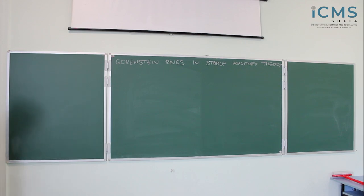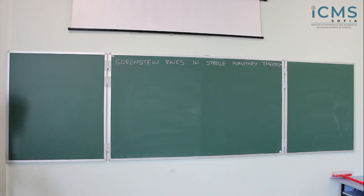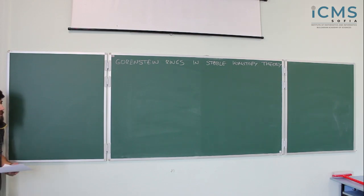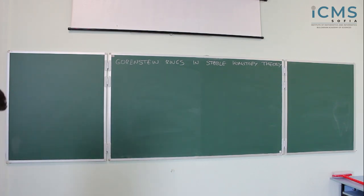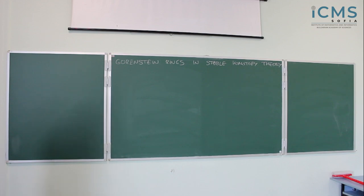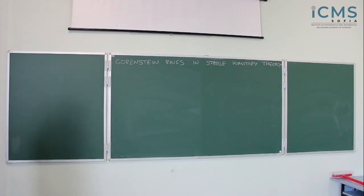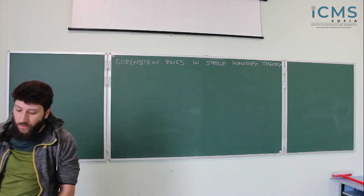What I want to tell you about today is a certain generalization of a classical notion from commutative algebra — the Gorenstein ring — a generalization that lives in the world of stable homotopy theory. I will quickly remind you what classically a Gorenstein ring is, and then I will spend a fair amount of time setting up context, describing a kind of category, a world, where one also has a notion of a commutative monoid, a ring-like object, and where one could pose the question whether or not one has an analogue of this Gorenstein property from classical commutative algebra.